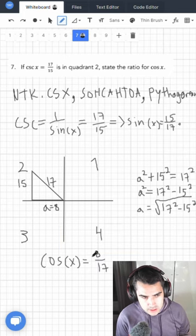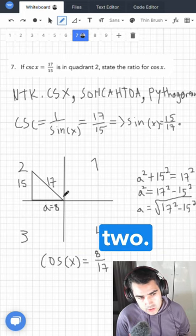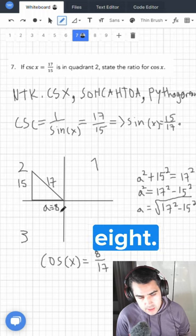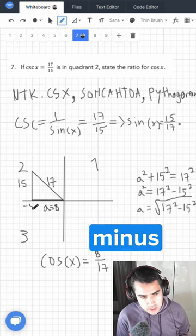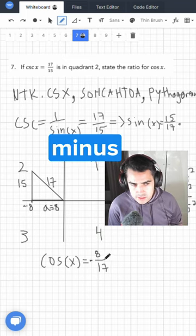Now why is it negative? Because it's in quadrant 2, and so this means that it's minus 8. This is minus 8 on the Cartesian plane. So this is actually minus 8.